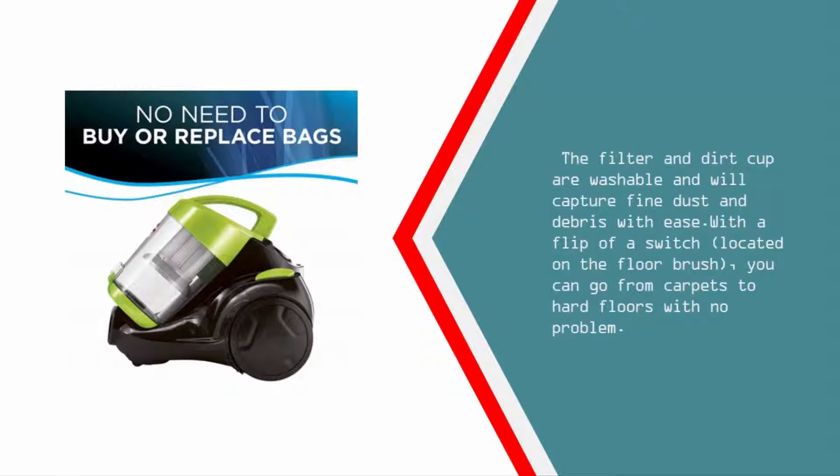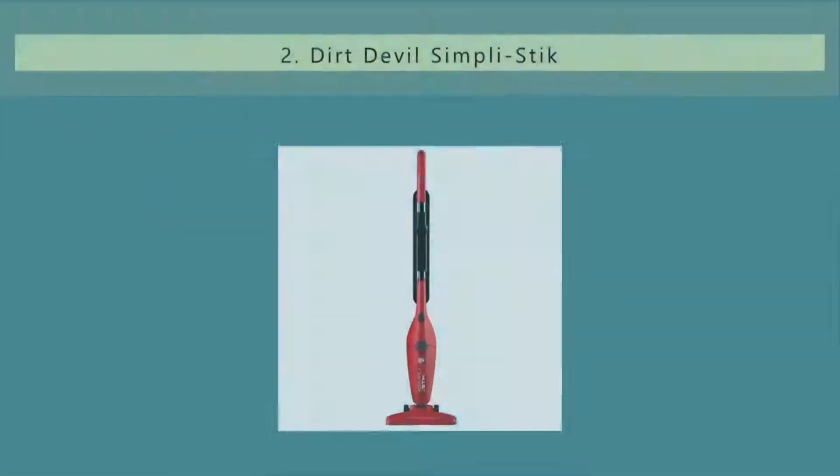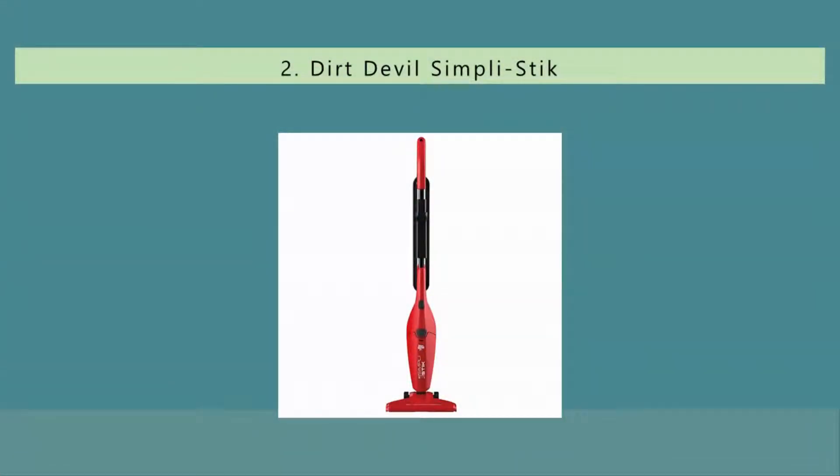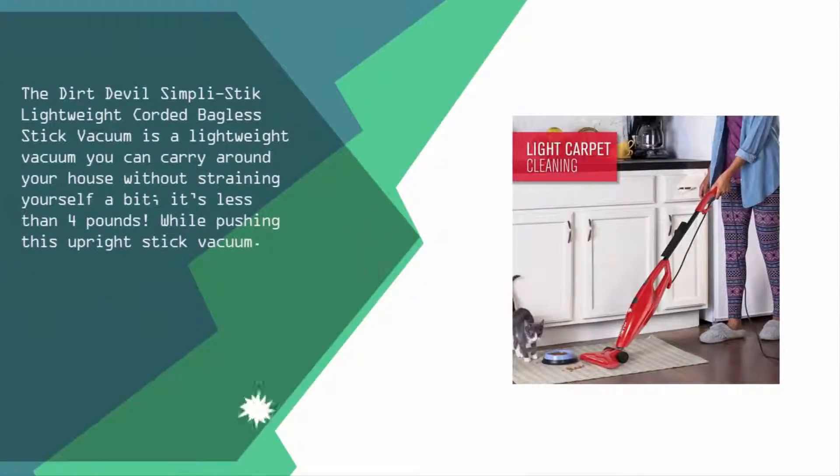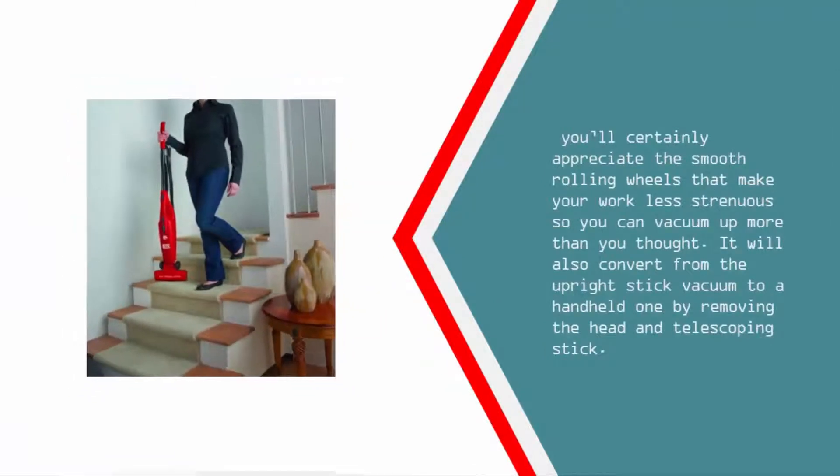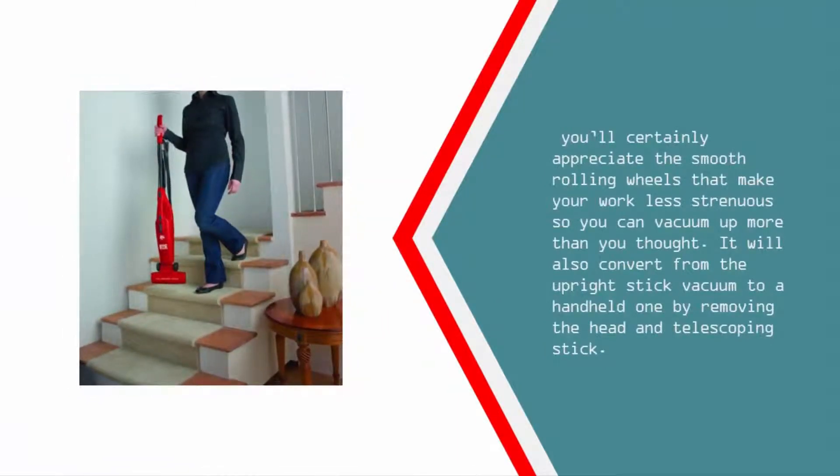Nearing the top of our list at number two: the Dirt Devil Simply Stick lightweight corded bagless stick vacuum is a lightweight vacuum you can carry around your house without straining yourself a bit. It's less than four pounds. While pushing this upright stick vacuum, you'll certainly appreciate the smooth rolling wheels that make your work less strenuous, so you can vacuum up more than you thought.